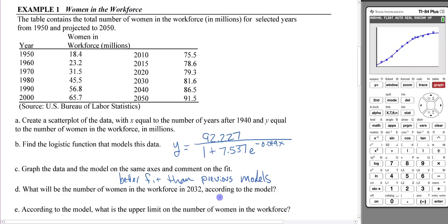What will be the number of women in the workforce in 2032 according to the model? x is the number of years after 1940, so this is 92. Let's trace, scroll so you're on the graph and not on the plots, and put in 92. In 92 years we have 85.17 million women in the workforce in 2032.